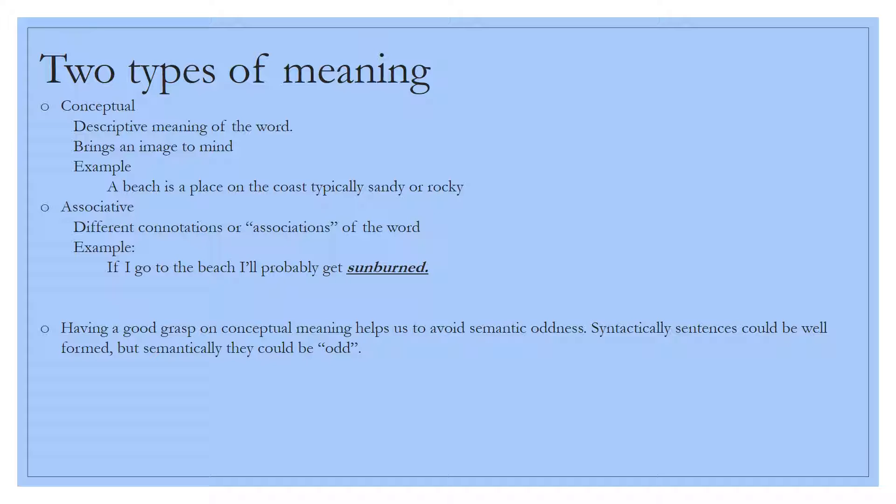On the other hand, associative meaning is different connotations or associations of the word. Going on with the example of beach, some people think of the beach and they think that they'll get sunburned. Going on from the needle explanation from our book, it also said that some associative meanings that could go with needle were painful. You could think of drugs. You could think of if somebody in your family is diabetic, you might instantly think of their shots, something along those lines. It isn't the actual definition, but it is something that we associate with the word.